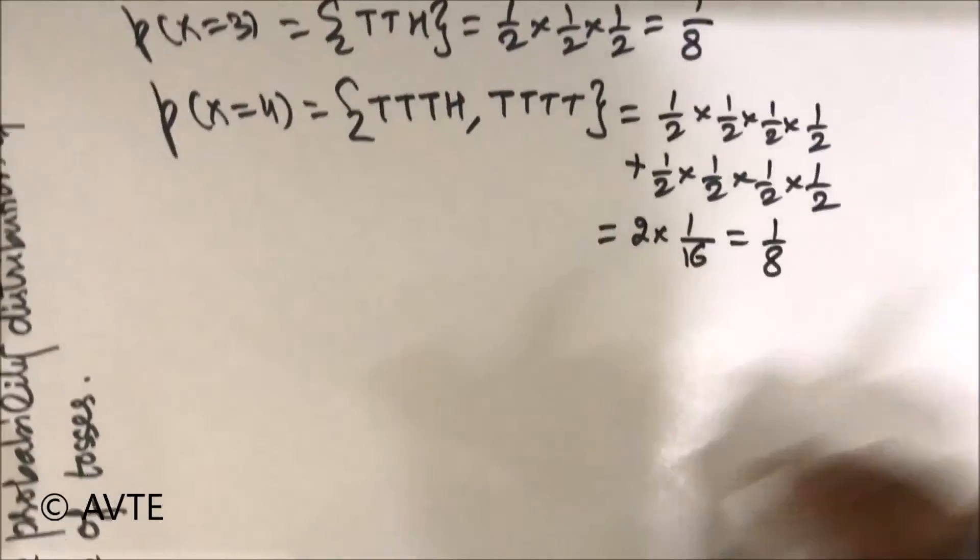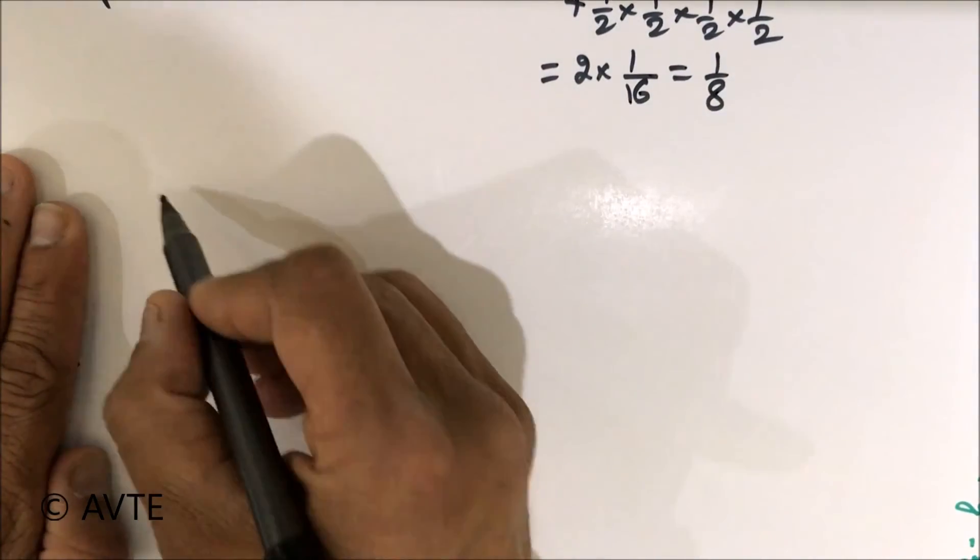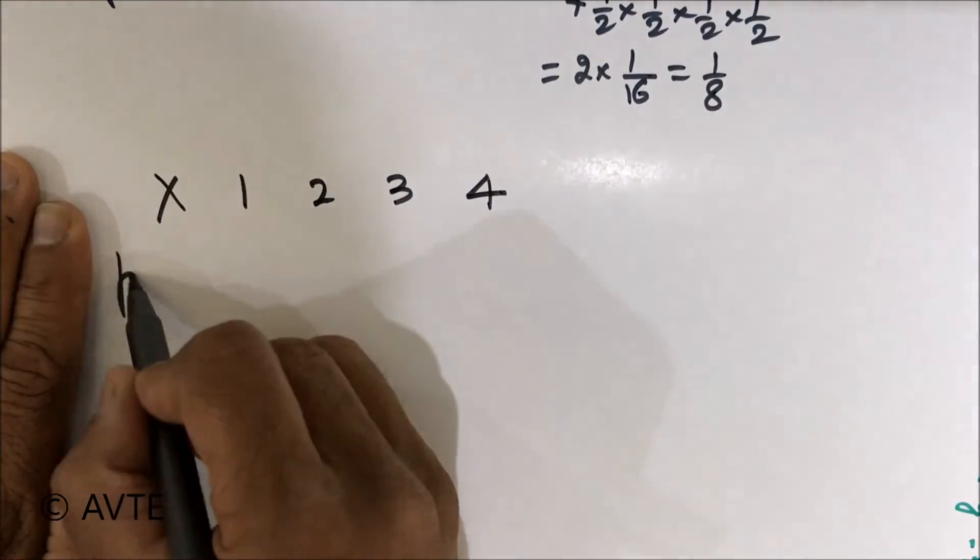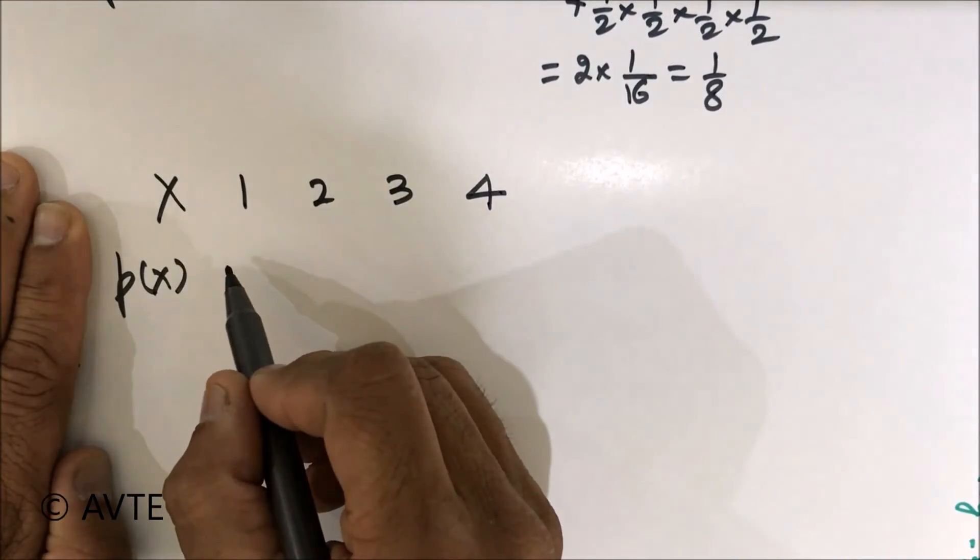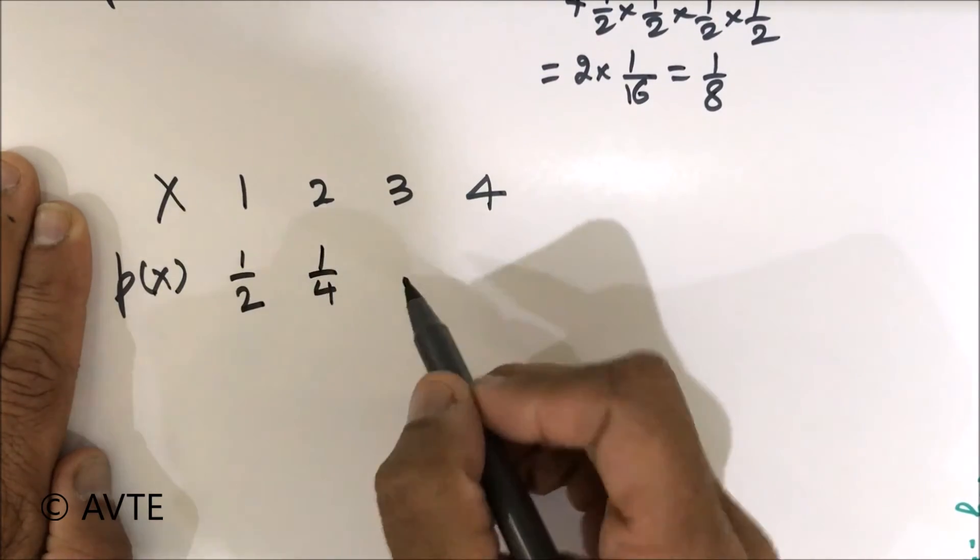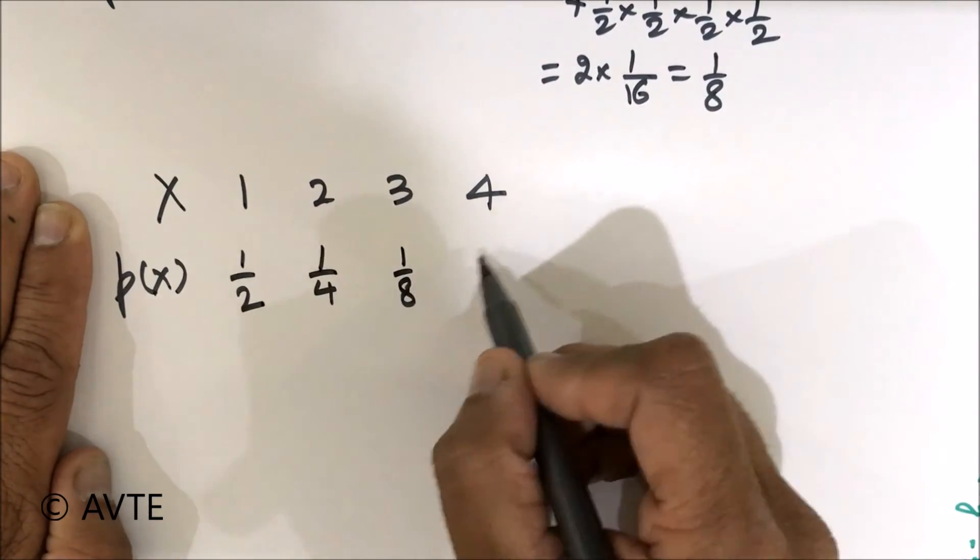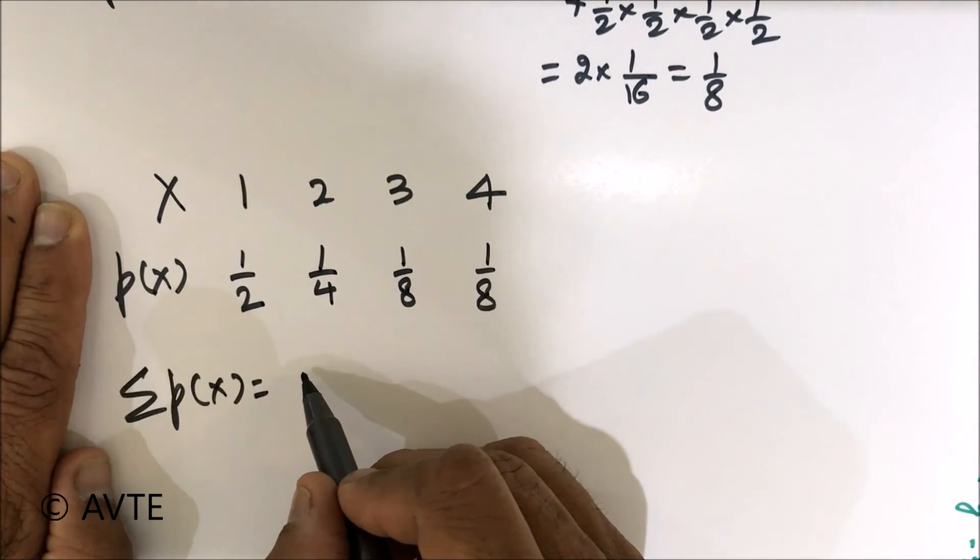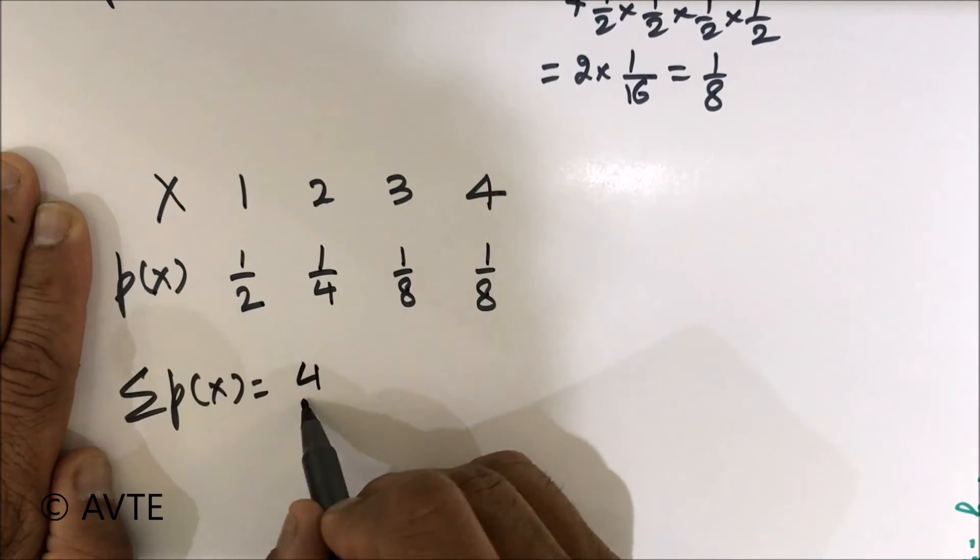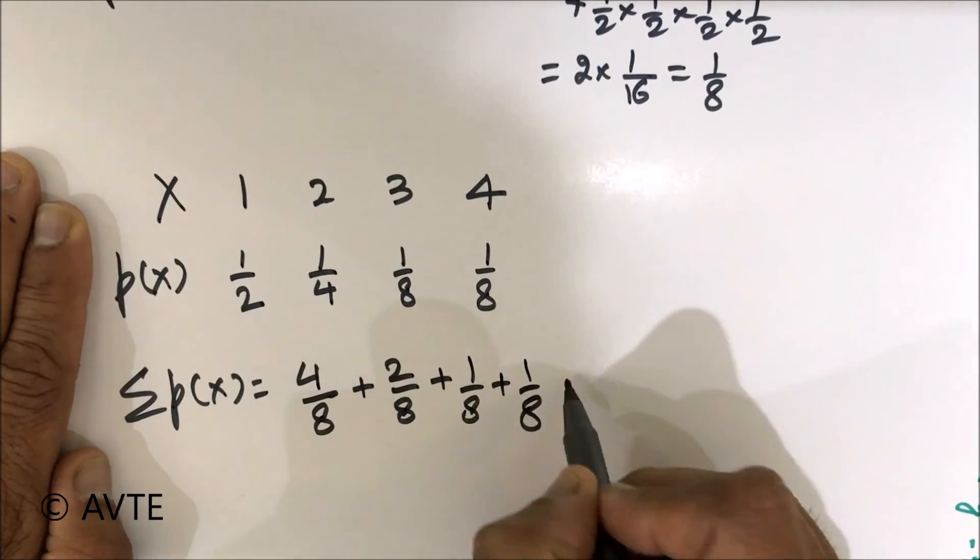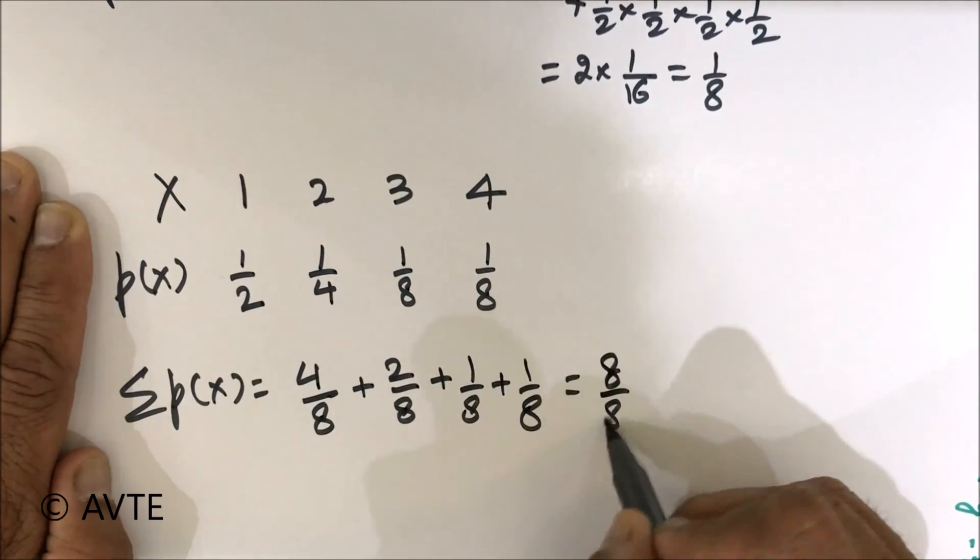So the table is very simple. The table will be when you get x as one, two, three, four and your corresponding probabilities are one by two, that can be taken as four by eight, then one by four which is two by eight, then one by eight, one by eight. If you sum total the probability, that is four by eight plus two by eight plus one by eight plus one by eight, this is coming to eight upon eight, this is equal to one.